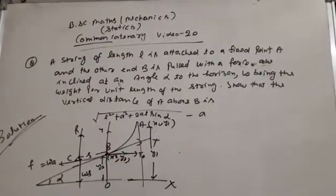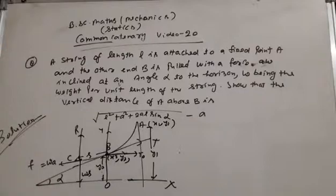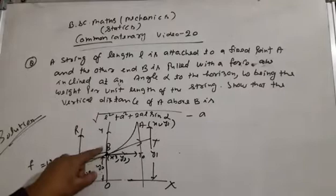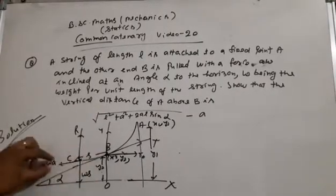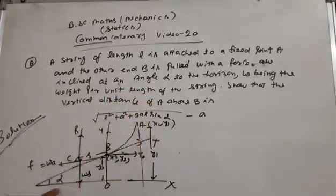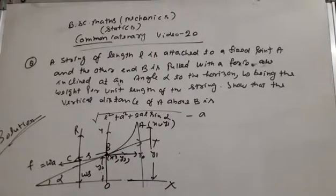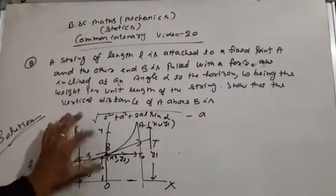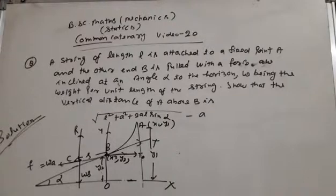This is statistics/mechanics video number 820. The question: a string of length l is attached to a fixed point A. The other end B is pulled with a force w inclined at an angle alpha to the horizontal. Given the weight per unit length of the string, find the vertical distance between A and B, which equals under root l squared plus a squared plus 2l sin alpha minus a.